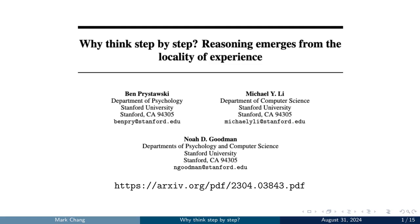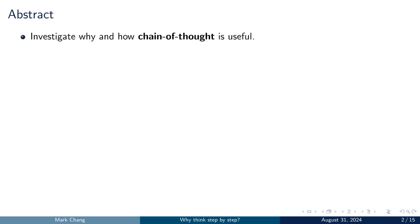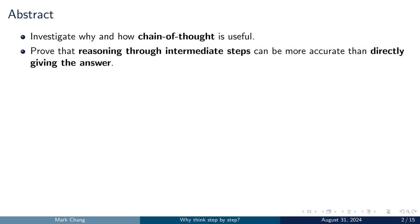In this video, I will present a paper which provides a theoretical explanation of the chain of thought method. Chain of thought reasoning, a technique often employed during large language models inference, guides these models to think step by step before arriving at a final answer, thereby enhancing their reasoning capabilities. This paper explores the reasons behind the effectiveness of chain of thought and how it functions, giving a theoretical explanation that reasoning through intermediate steps can yield more accurate answers than providing a direct answer without any reasoning steps.